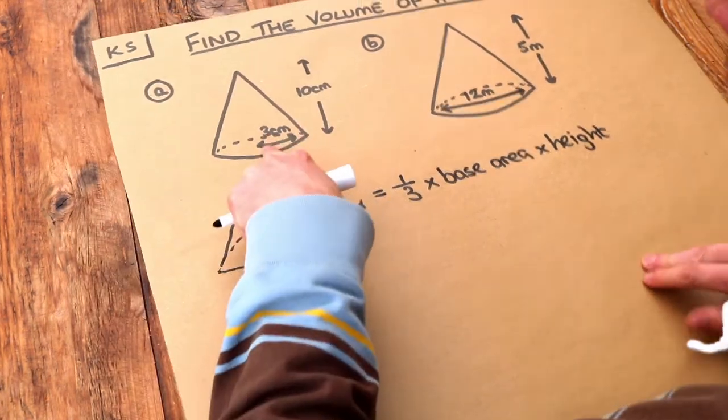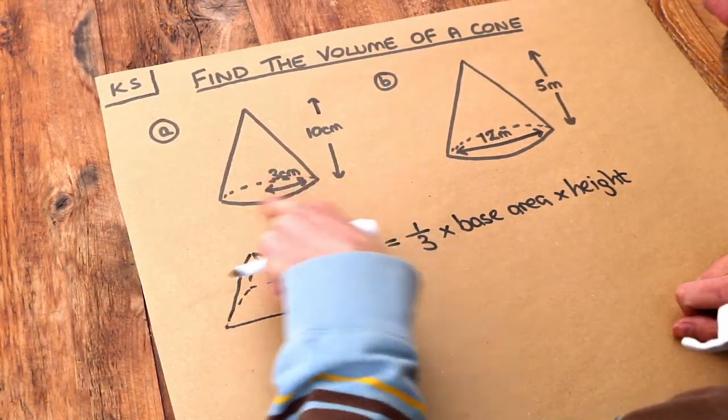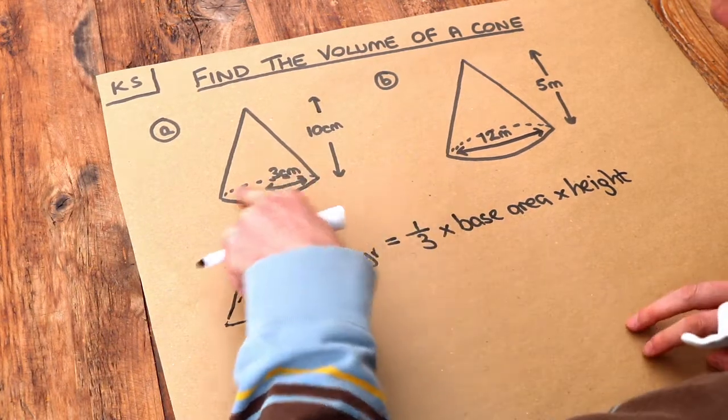Now a cone is just a special kind of pyramid. It's a pyramid with a circular base.